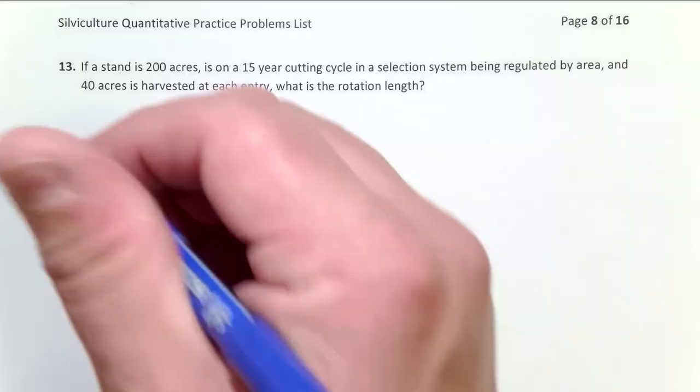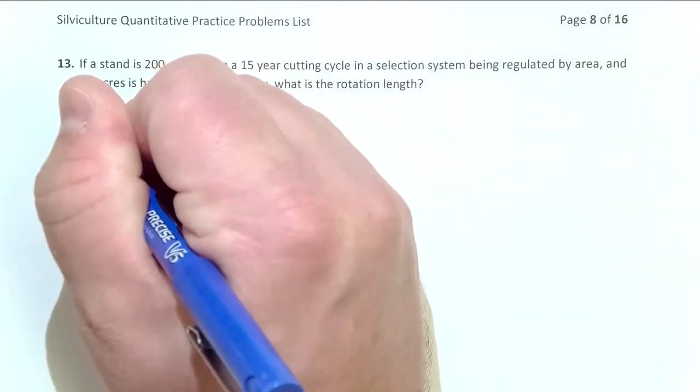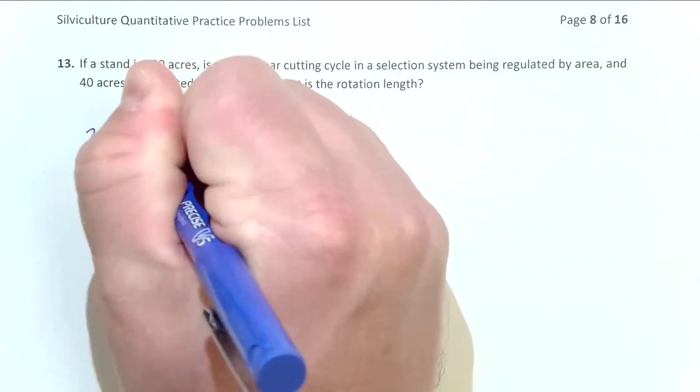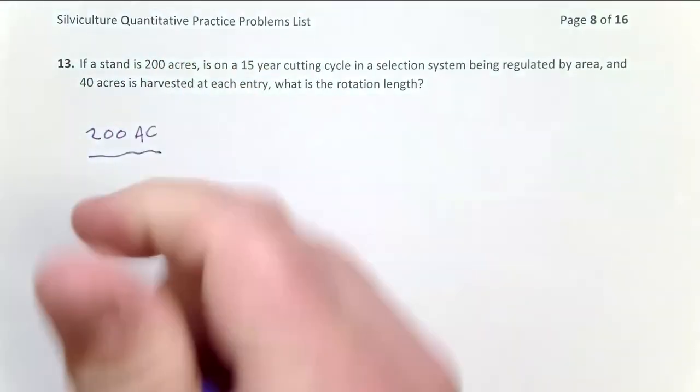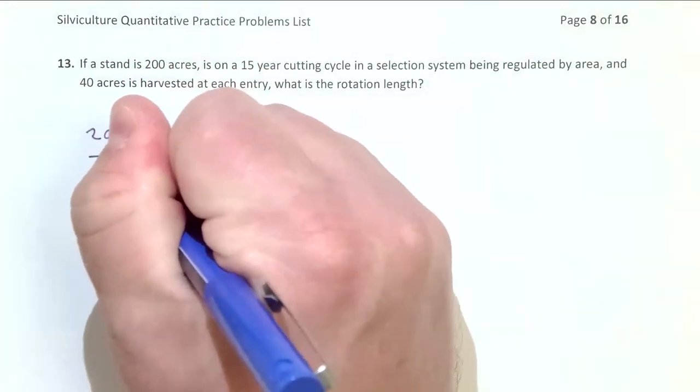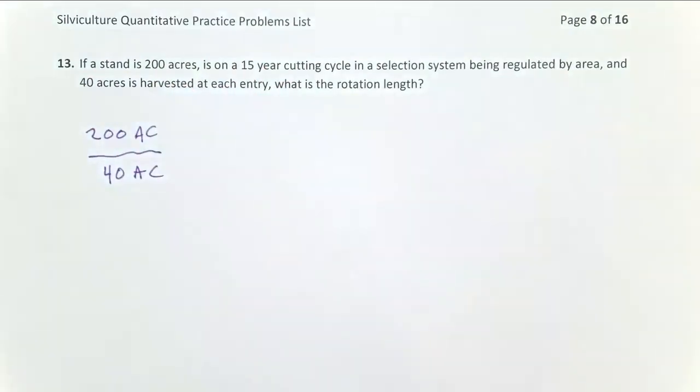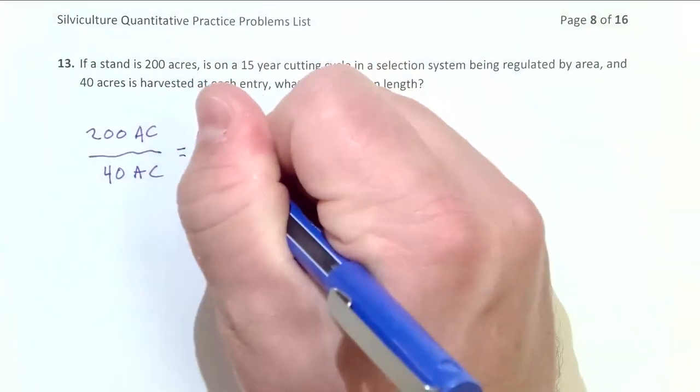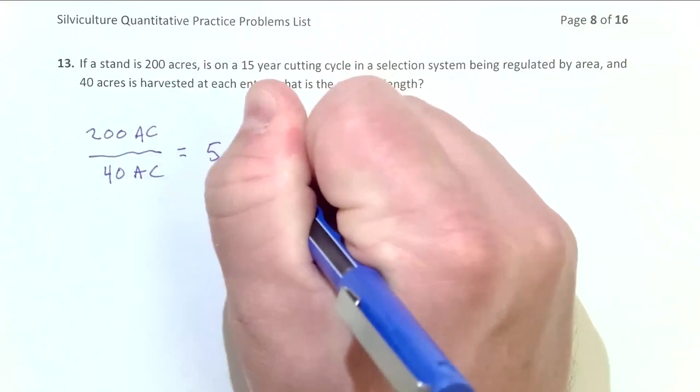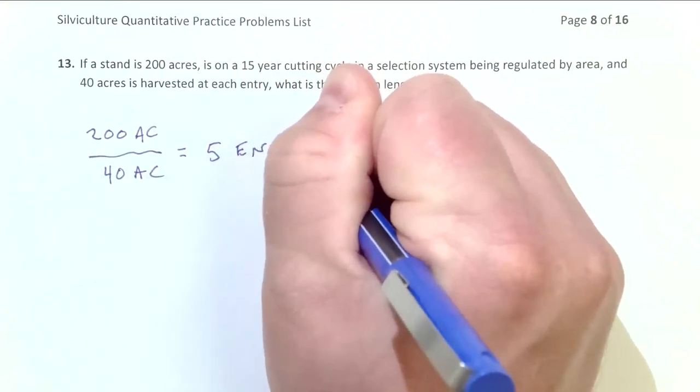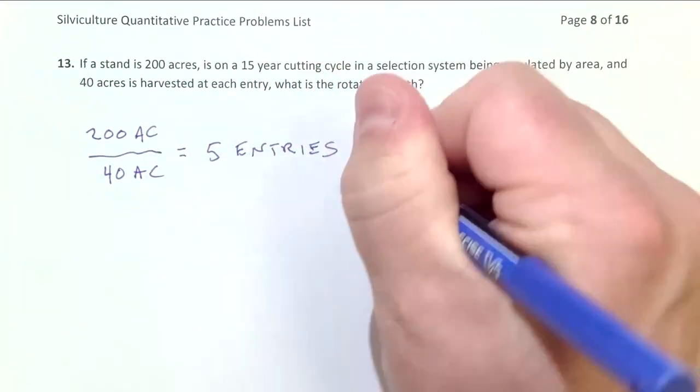And so here I'll take my 200 acre stand and I will divide that by the 40 acres that we harvest at each entry. And what that tells me is I can make five entries to harvest over the course of one rotation.